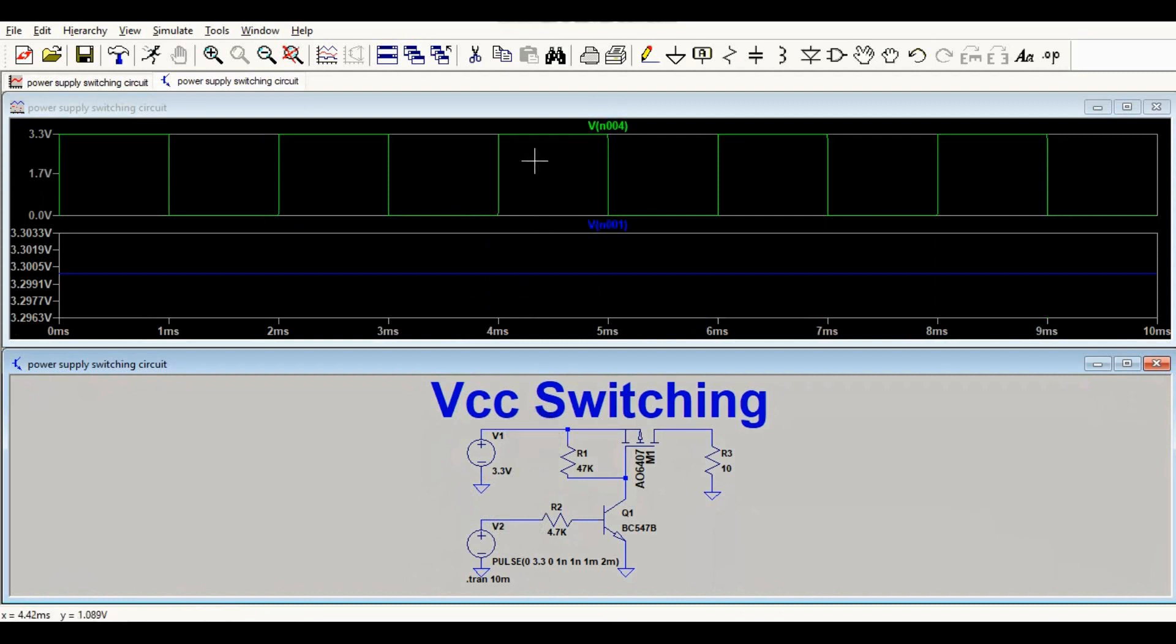This is your input signal, and this is your output signal. You can see this is your supply voltage, 3.3 volts. At the output, you are also getting 3.3 volts after a time interval of one millisecond. The total pulse duration is two milliseconds, and one millisecond is